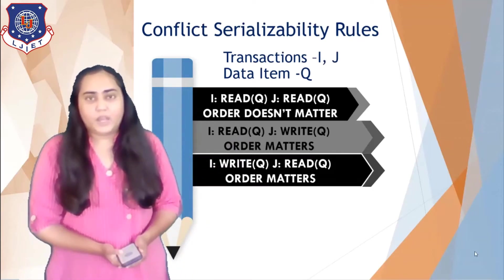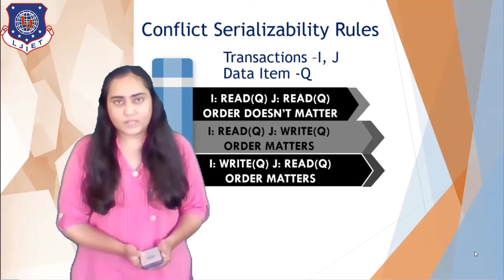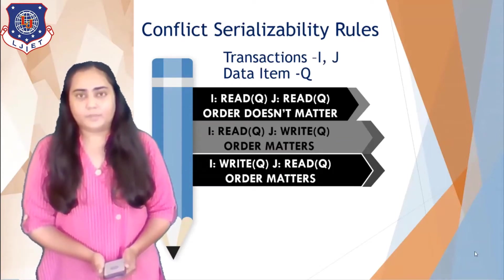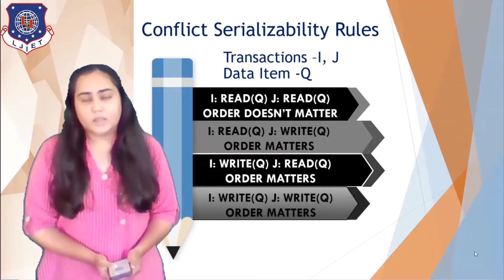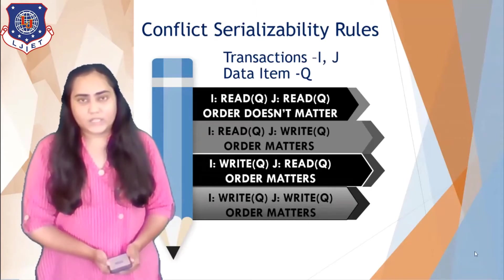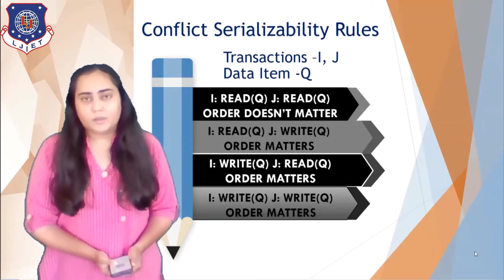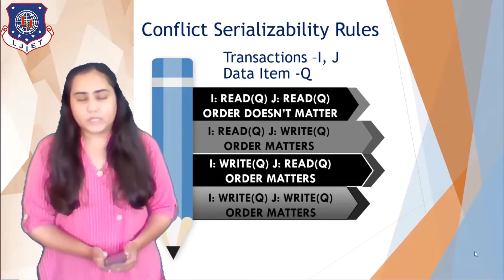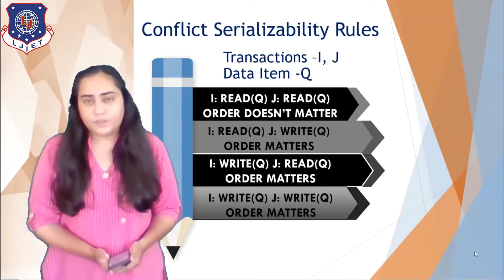The third case is where i is trying to write q and j is trying to read q — again the order matters because the operations are read and write on the same data item. The fourth rule is write-write, where i is writing q and j is also writing q. In this case the order matters because two operations are performed on the same data item, and if that order is changed then the value of q will change.